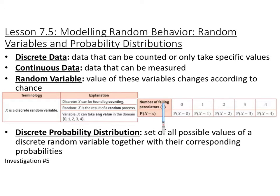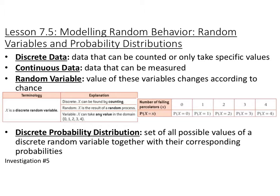The example I pulled is the number of failing percolators, called x, and it could be anything 0, 1, 2, 3, or 4. We're going to look at the probability distribution — the probability that x is 0, 1, 2, 3, or 4. A discrete probability distribution is a set of all possible values of a discrete random variable together with their corresponding probabilities.